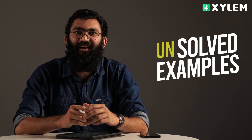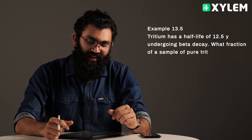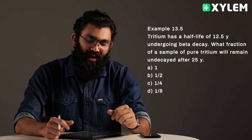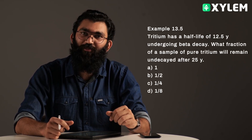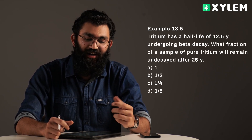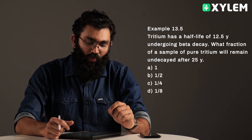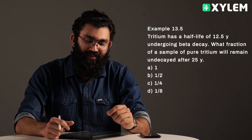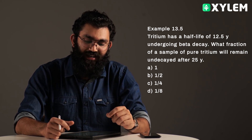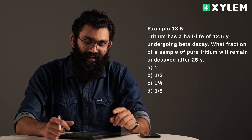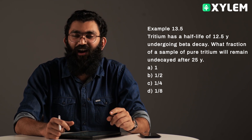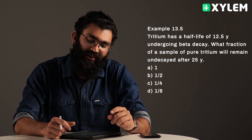Hi all, this is J.B.A. So, in nuclear, salt example 13.5. Tritium has a half-life of 12.5 years, undergoing beta decay. What fraction of a sample of pure tritium will remain undecayed after 25 years?